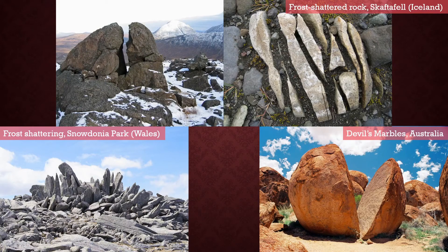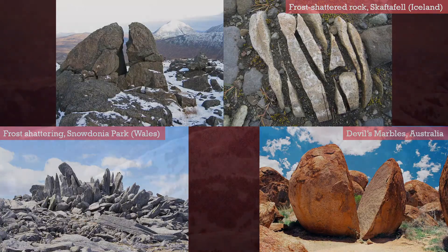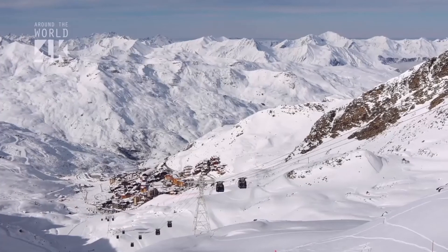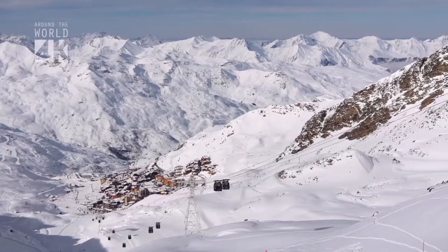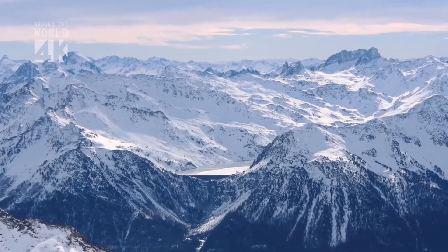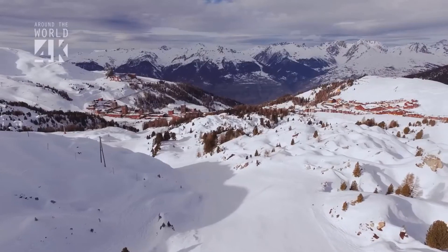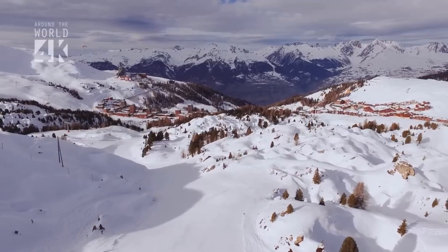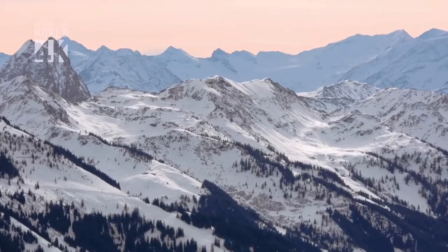Because frost shattering requires temperatures cold enough for water to freeze, you are unlikely to find the effects in many climates around the world. The most common locations, therefore, for this process are areas of high latitude, like the poles, which are cold because of lack of direct sunlight, and areas of high altitude, like mountains, because of the cold temperatures created by height above sea level.